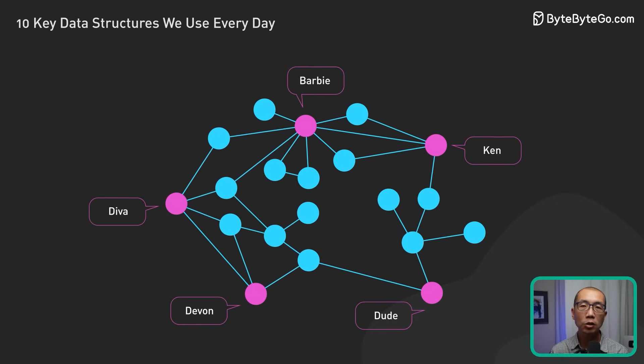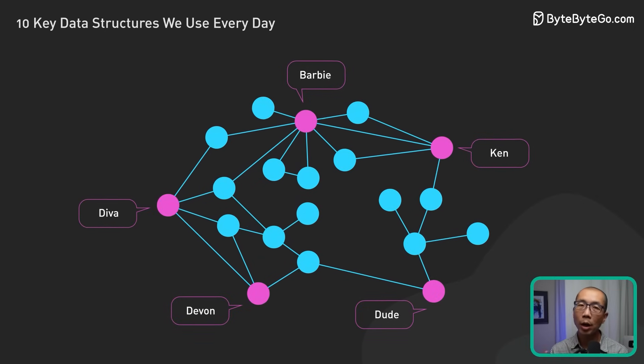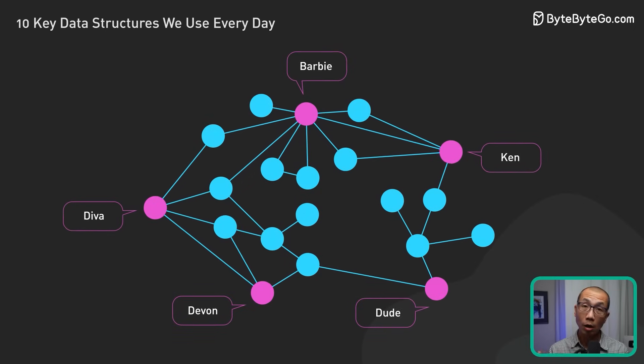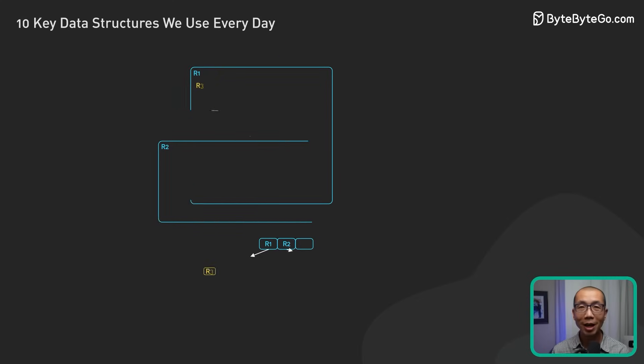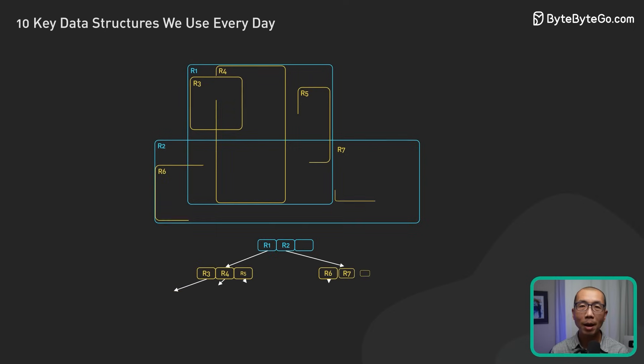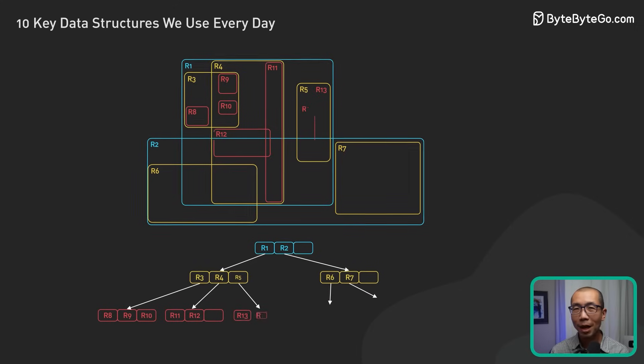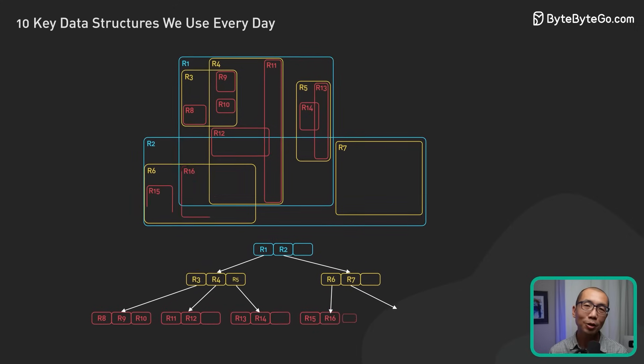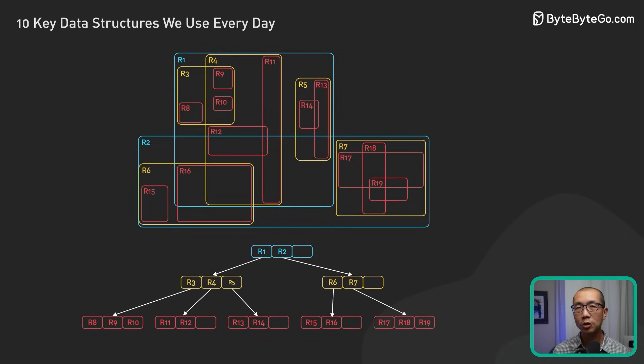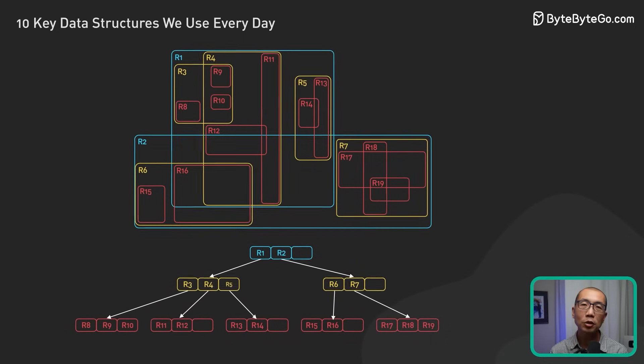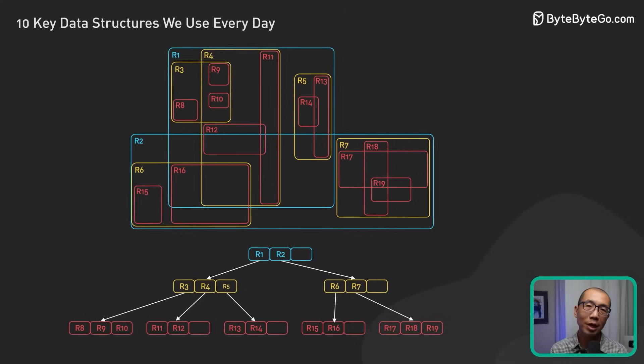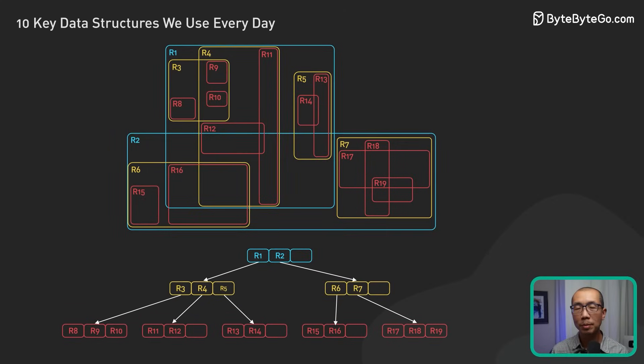R-trees are good at finding nearest neighbors. They are crucial for mapping apps and geolocation services. In a mapping application, R-trees can be used to store spatial data, such as points of interest. This enables efficient queries to find the nearest locations based on the user's current position.